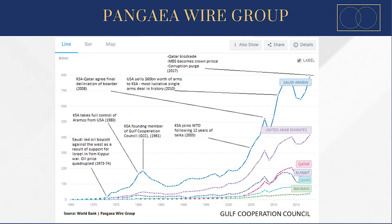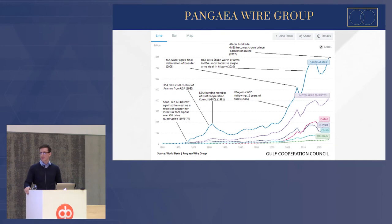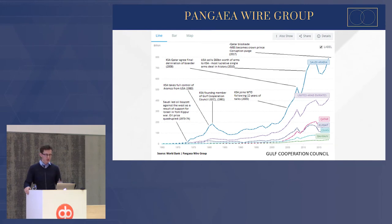Three major things happened in 2017: the Qatar blockade, Mohammed bin Salman becoming the crown prince, and the corruption purge in Saudi Arabia. As the leadership becomes younger and more aspirational, they lead in the GCC. These are the reasons I believe why.